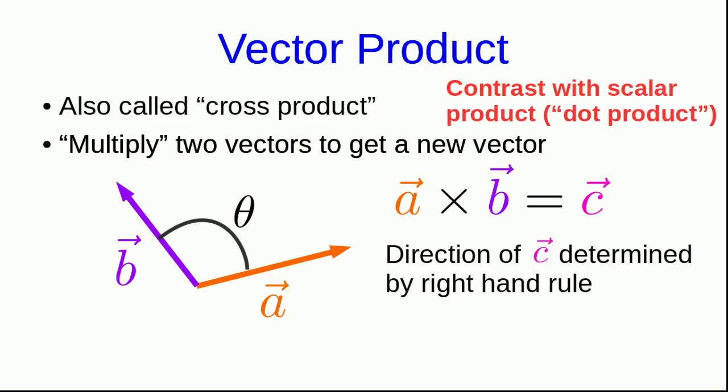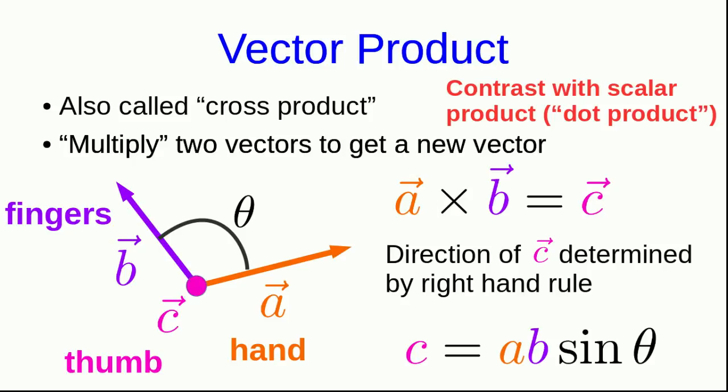Well, the direction of C is defined as being determined from the right-hand rule. And so we take our hand and point it along the first vector in the cross product, A, and then we bend our fingers along B and stick out our thumb, which tells us C, which in this case would give you C pointing out of the screen. And the remaining part of the definition of the vector product is that the magnitude of C is then AB sine theta.